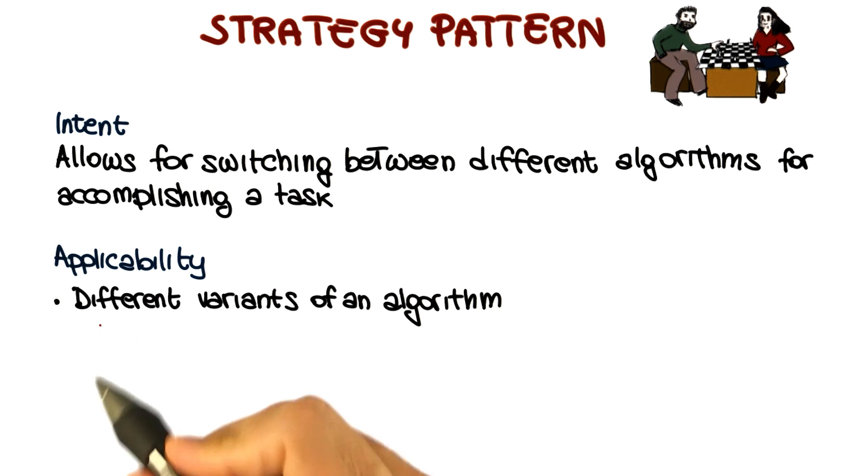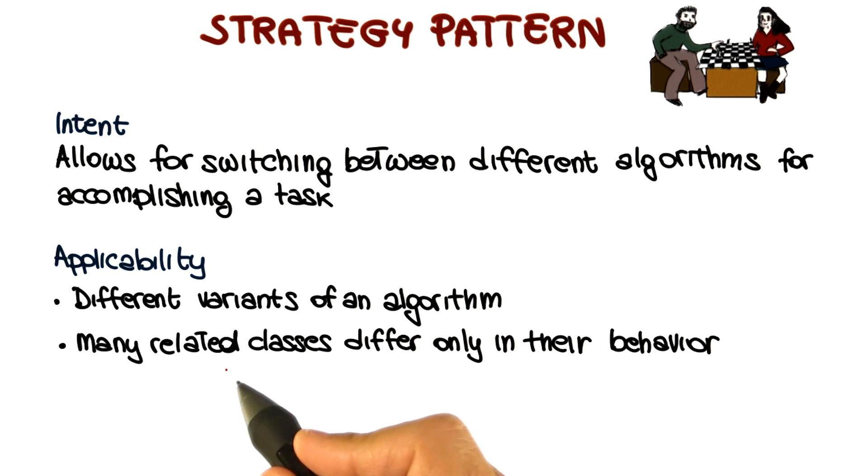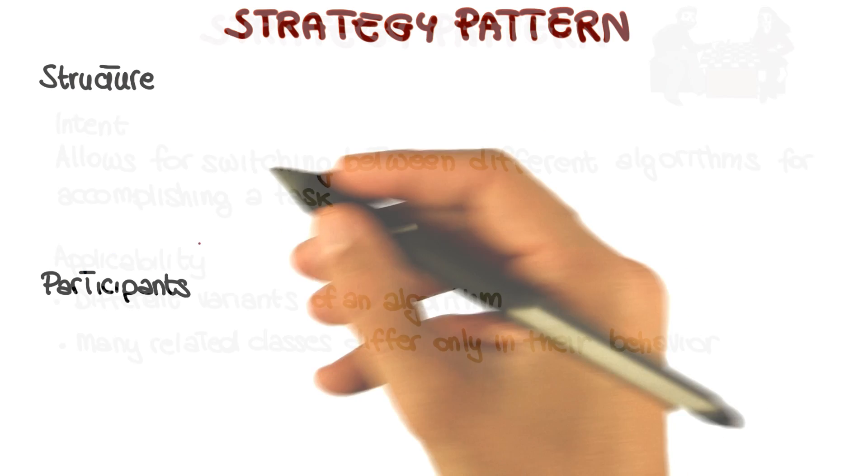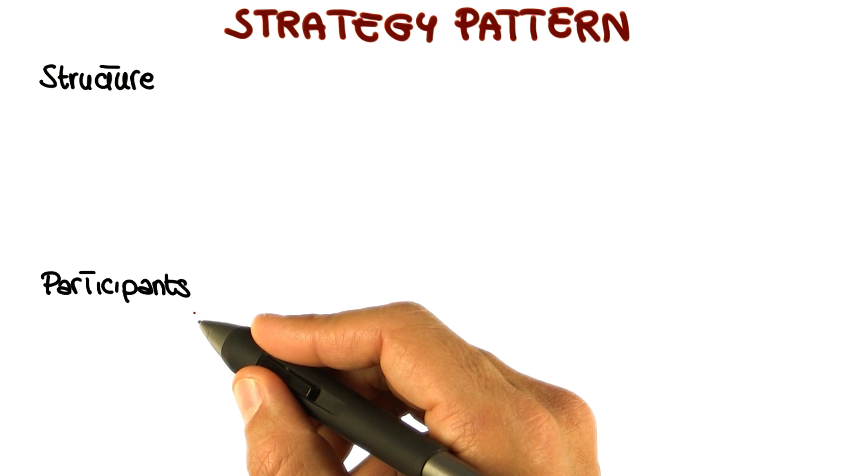And this pattern is applicable not only when we have different variants of an algorithm, but also when we have many related classes that differ only in their behavior. So let's get more concrete and see how this is done. And I'm going to do it as before by discussing the structure and the participants for the strategy pattern.